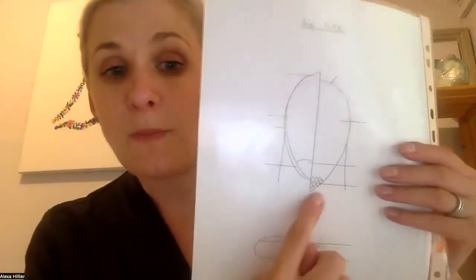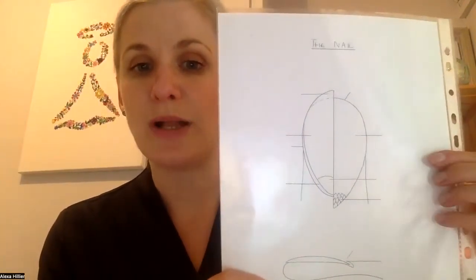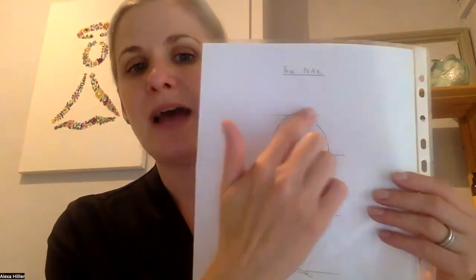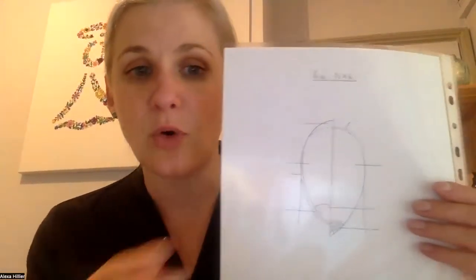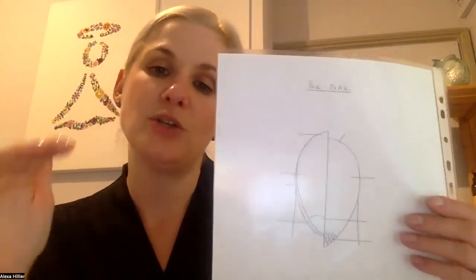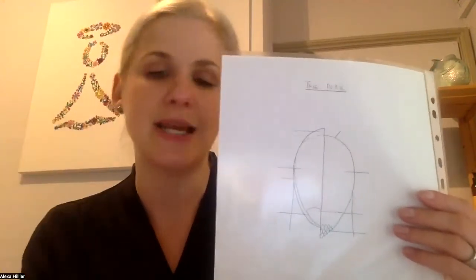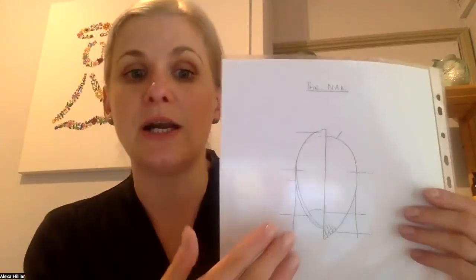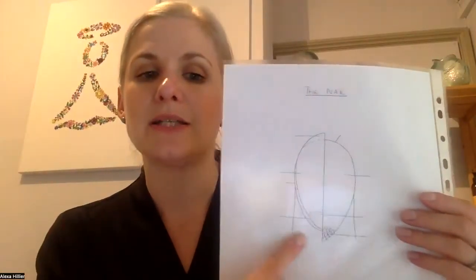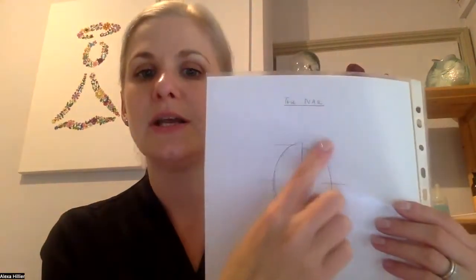Nails take around six months to grow from the matrix to the free edge on our fingers, and around 12 months on our toes. So what we're doing to our bodies now is what's feeding those cells. If clients suddenly have nail issues — peeling or dryness they've never had before — we want to think about what was happening when those nail cells were being produced: what were they eating, were they on medication, were they ill? Because all of those things impact how that nail grows, and six to twelve months later that's when we see it.